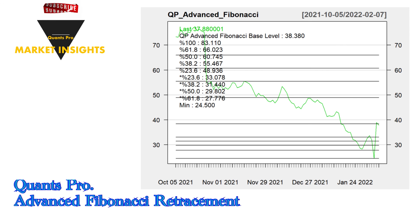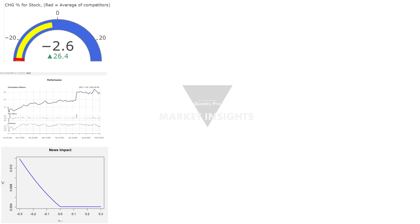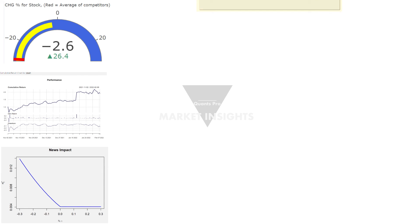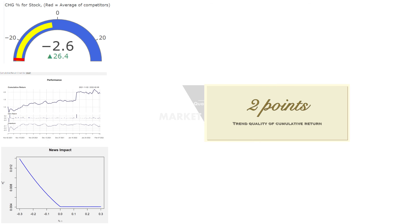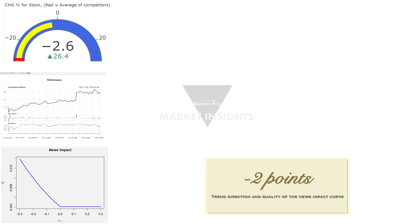The advanced Fibonacci retracement levels determined by Quants Pro analytics will change the arithmetic of winner and loser averages within the framework of game theory, in favor of the investor. From the charts, it can be understood that QP Advanced Fibonacci retracement better detects significant price breaks. To create a clearer index in the investor's mind, Quants Pro offers a hybrid index consisting of cumulative return performance, proportional change to competitor returns, and news impact analysis.